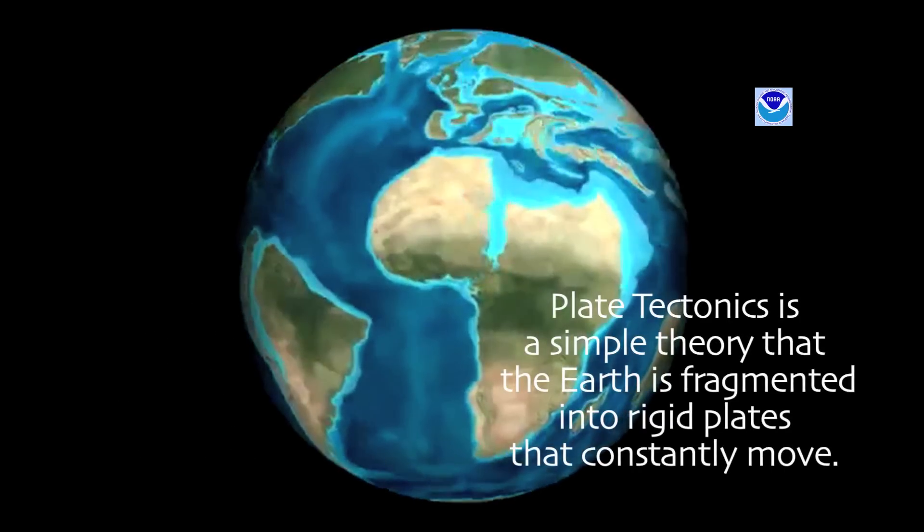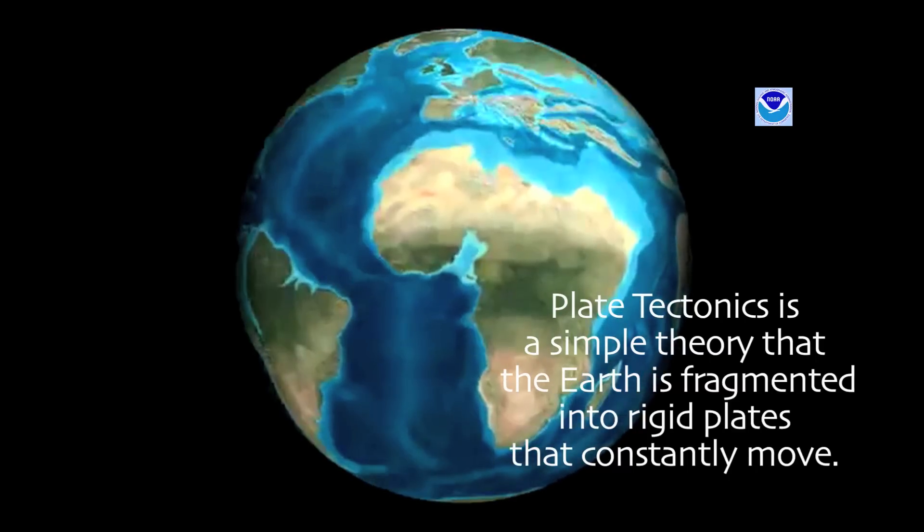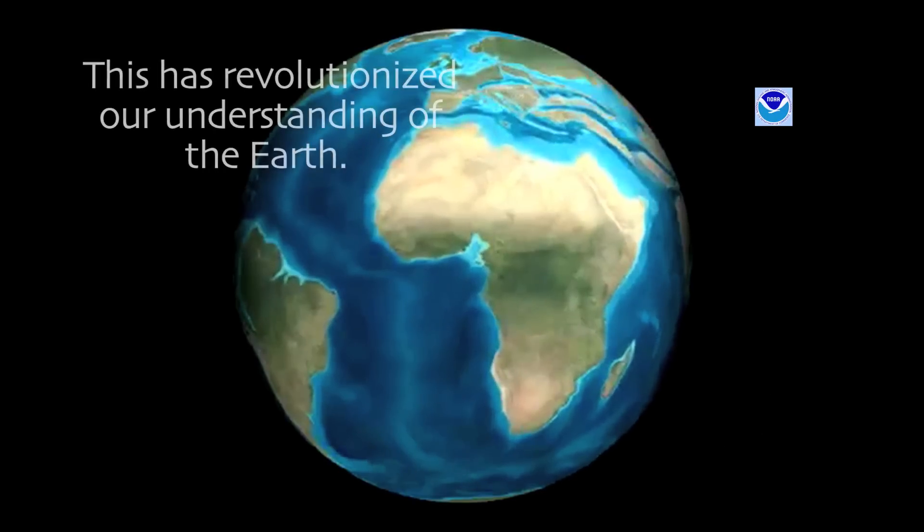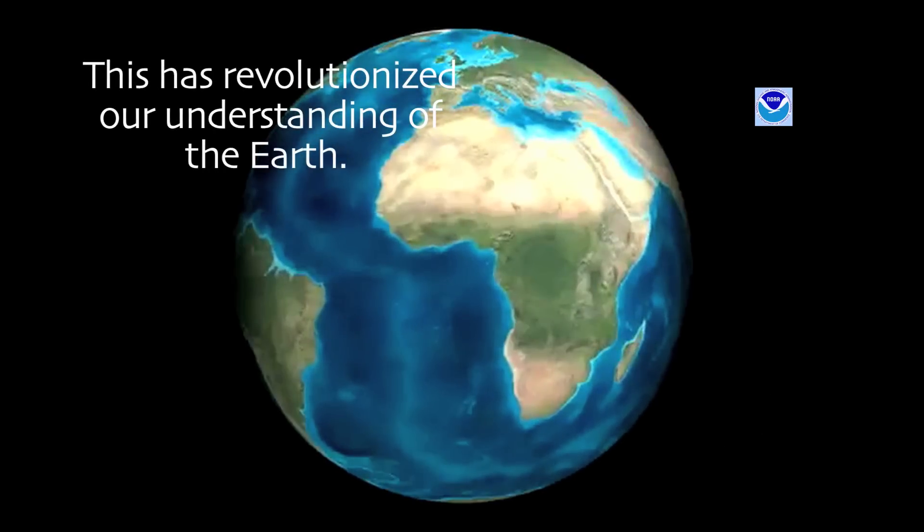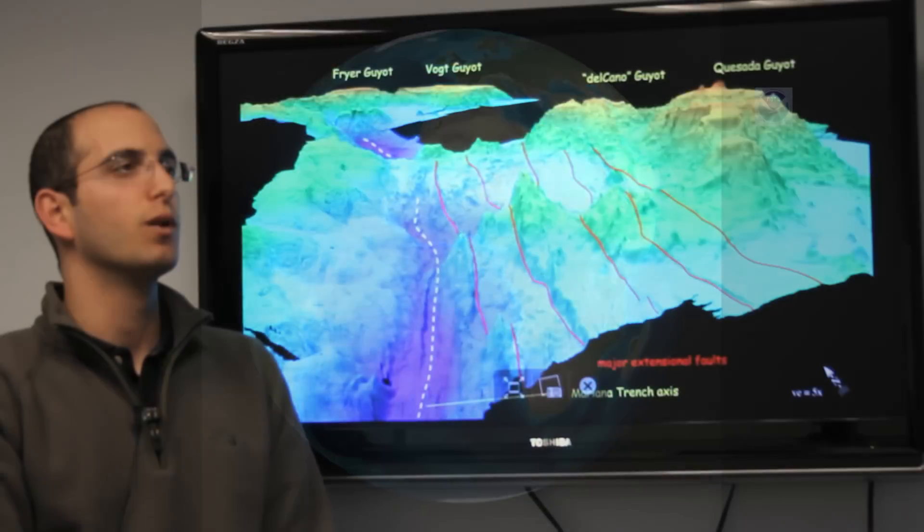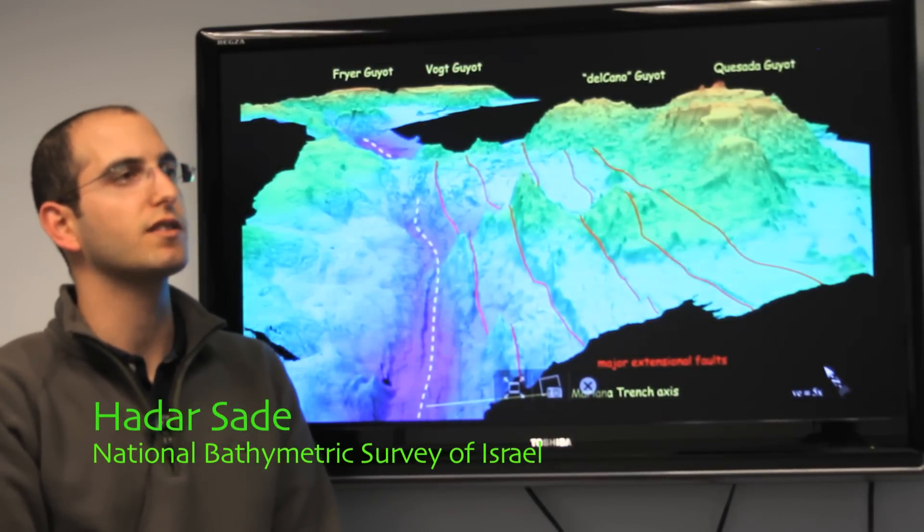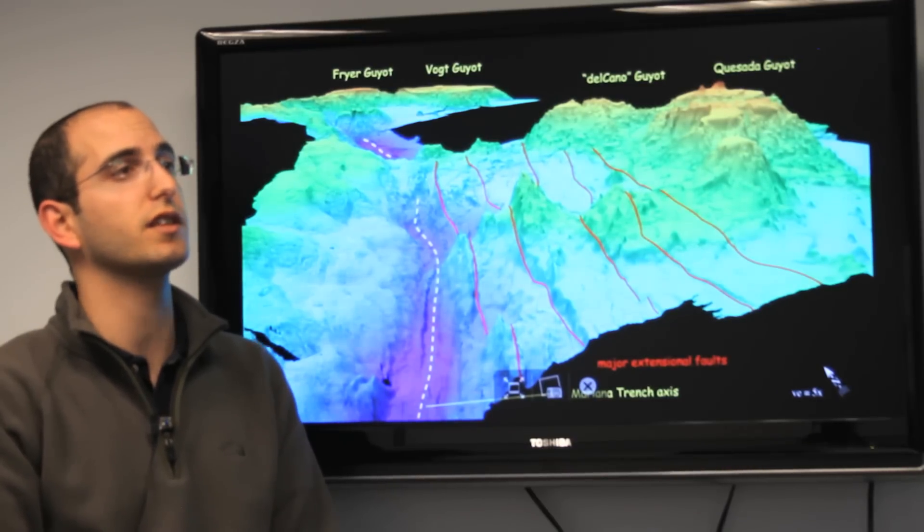Plate tectonics is a simple theory that the Earth is fragmented into rigid plates that constantly move. This has revolutionized our understanding of the Earth. We need to remember that it is not the things we already know that will make a difference, but the things we have yet to discover that will make breakthroughs in our understanding of the planet.